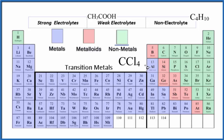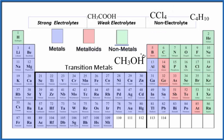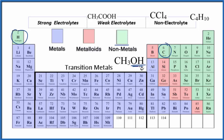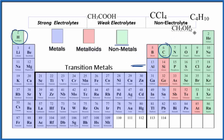What about CCl4? Again, we have carbon and chlorine — both nonmetals. It's not an acid or a base, so CCl4 is also going to be a non-electrolyte. For CH3OH, we see the OH and might think it's a base, but the OH is bonded to carbon and hydrogen — both nonmetals. We don't have a metal, so this isn't a hydroxide. When you have an OH bonded to a carbon, it's actually an alcohol, and it's considered a non-electrolyte.